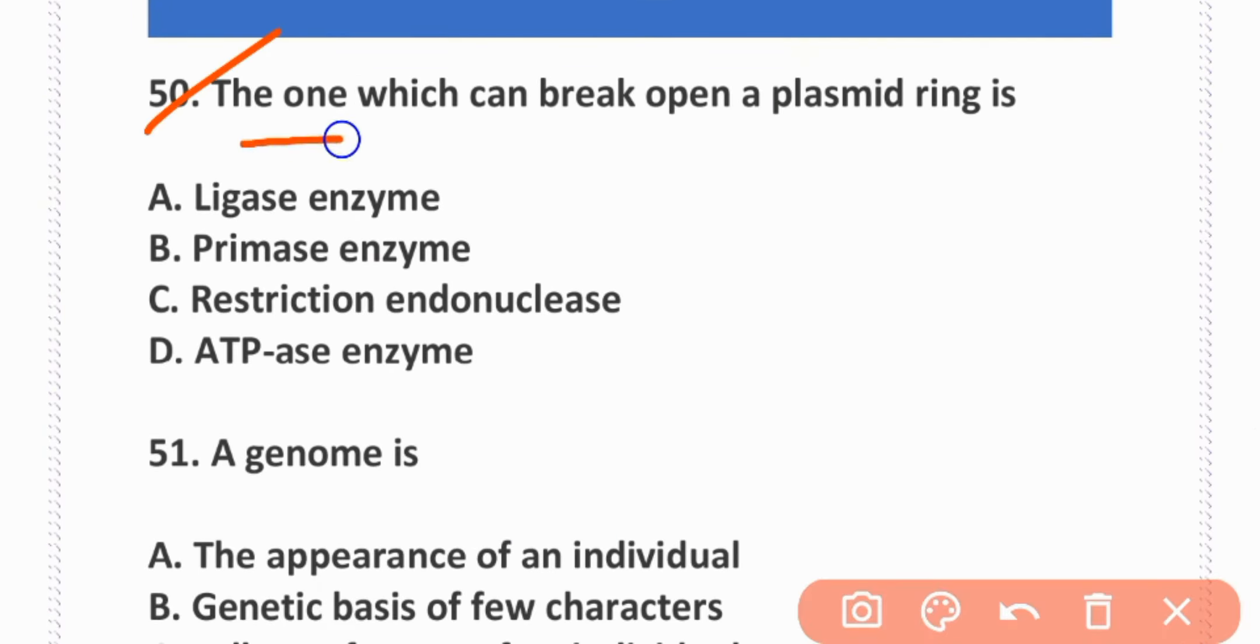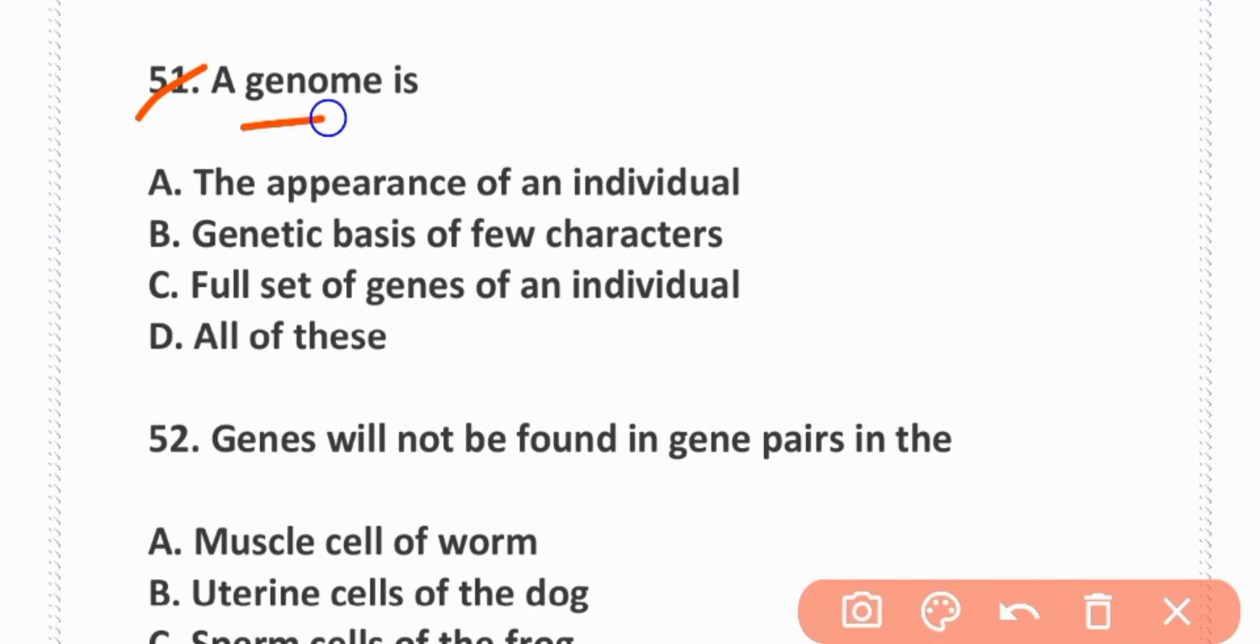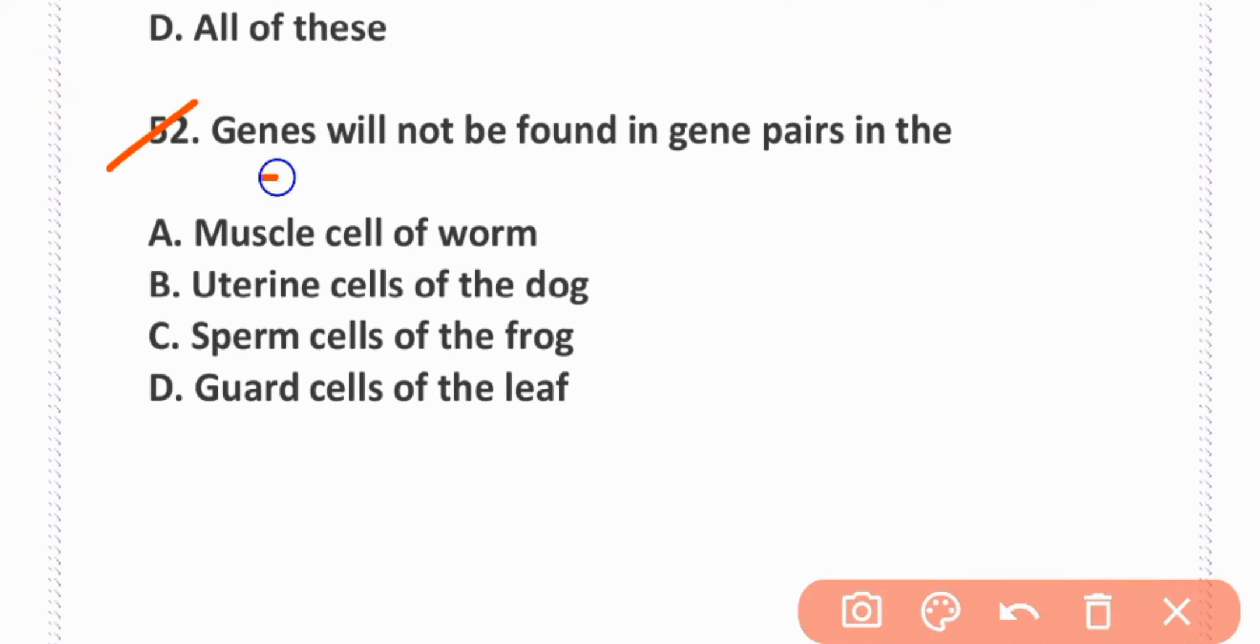The one which can break up and open a plasmid ring is ligase enzyme. Option A is correct. A genome is the full set of genes of an individual. Genes will not be found in gene pairs in the sperm cells of the frog.